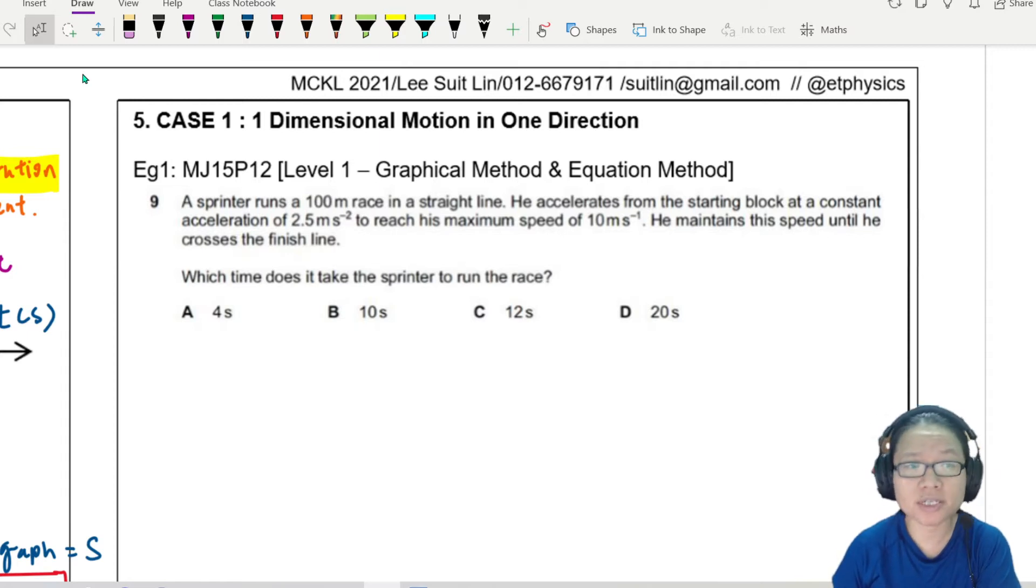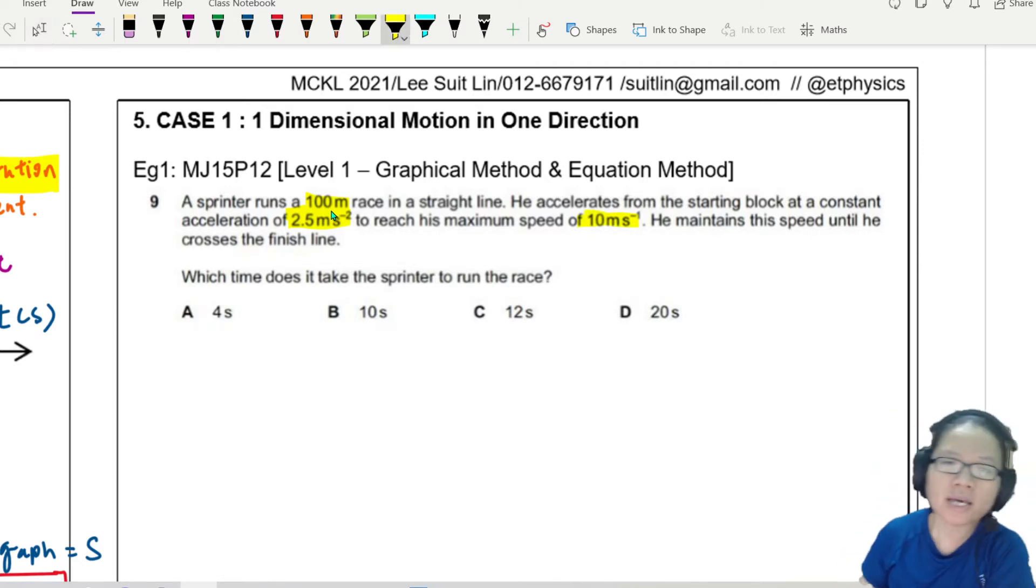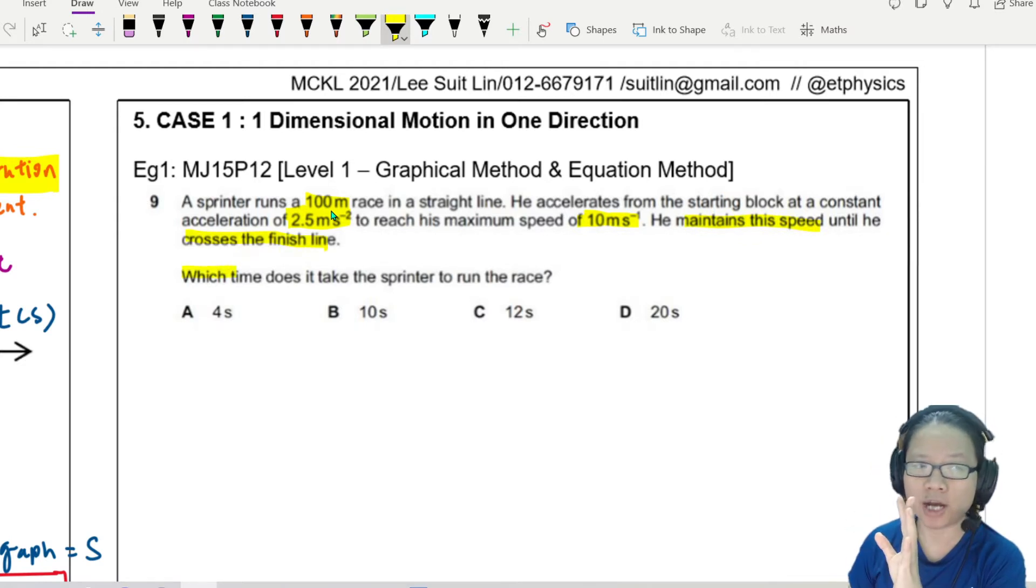A sprinter runs a 100 meter race in a straight line. He accelerates from the starting block at a constant acceleration of 2.5 meter per second squared to reach his maximum speed of 10 meter per second. He then maintains this speed until he crosses the finish line. Which time does it take the sprinter to run the race?